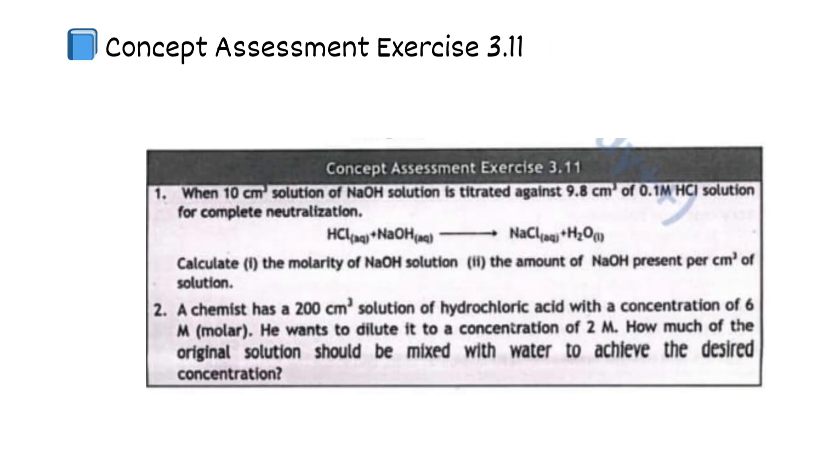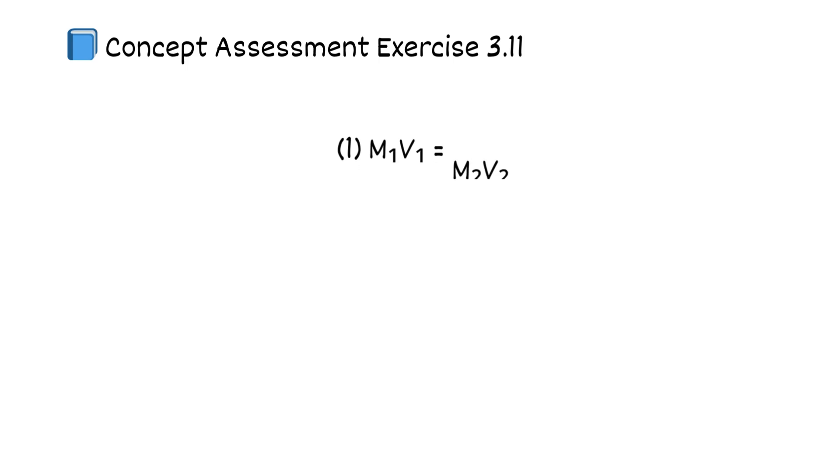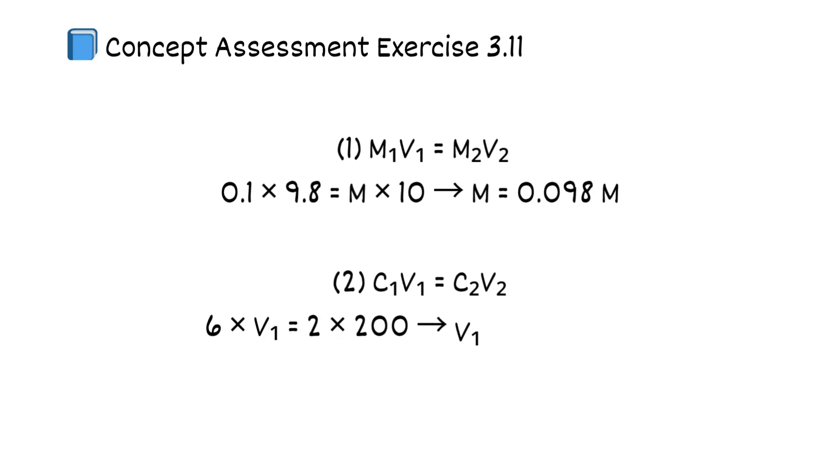Concept assessment exercise 3.11. M1V1 equals M2V2. Problem 1: 0.1 times 9.8 equals M times 10. M equals 0.098 M. Problem 2: C1V1 equals C2V2. 6 times V1 equals 2 times 200. V1 equals 66.67 cm³.